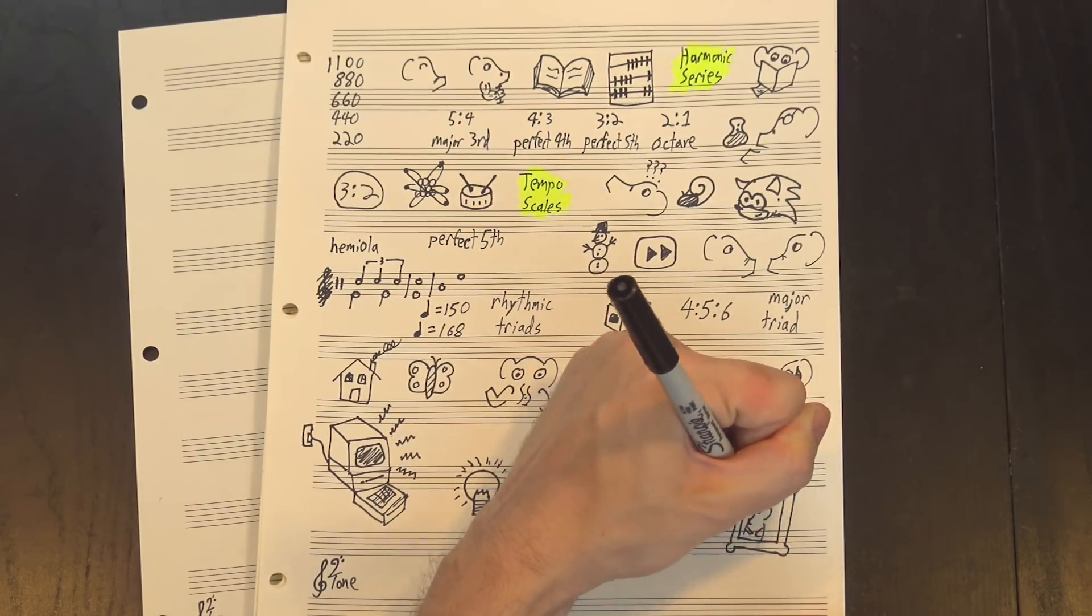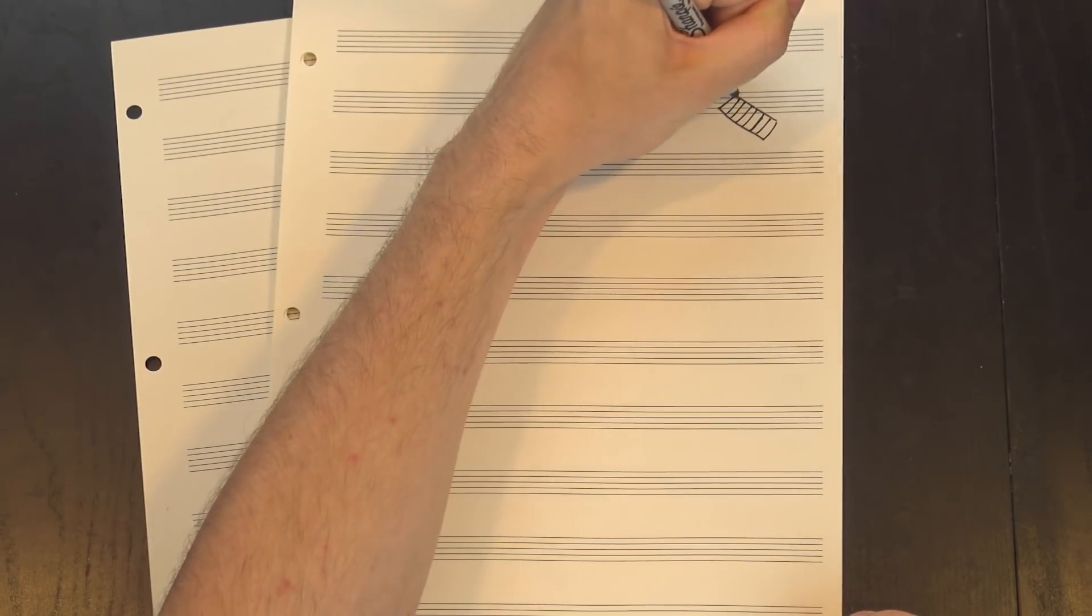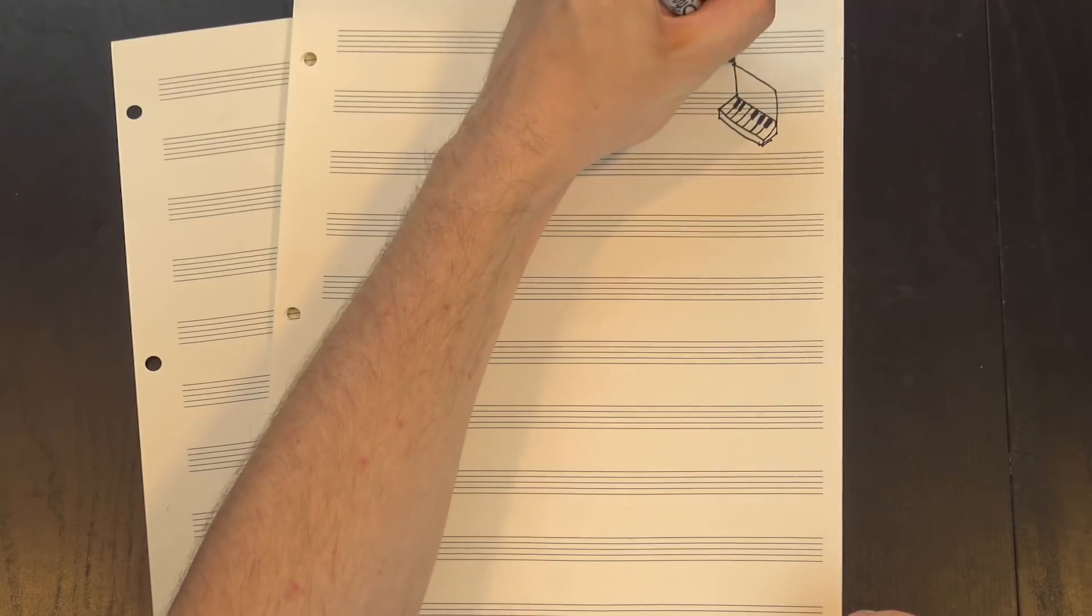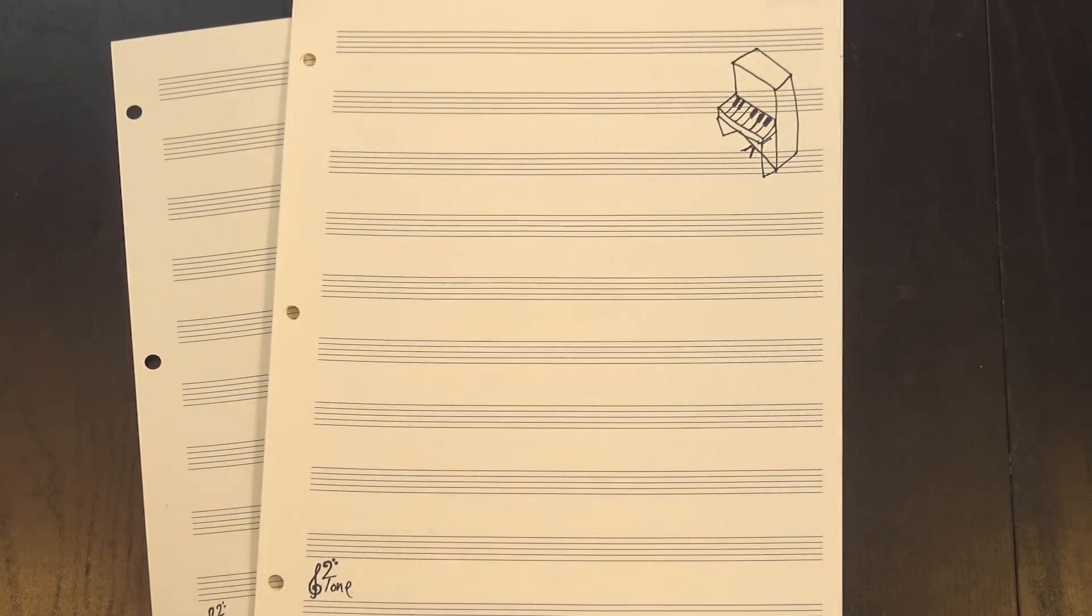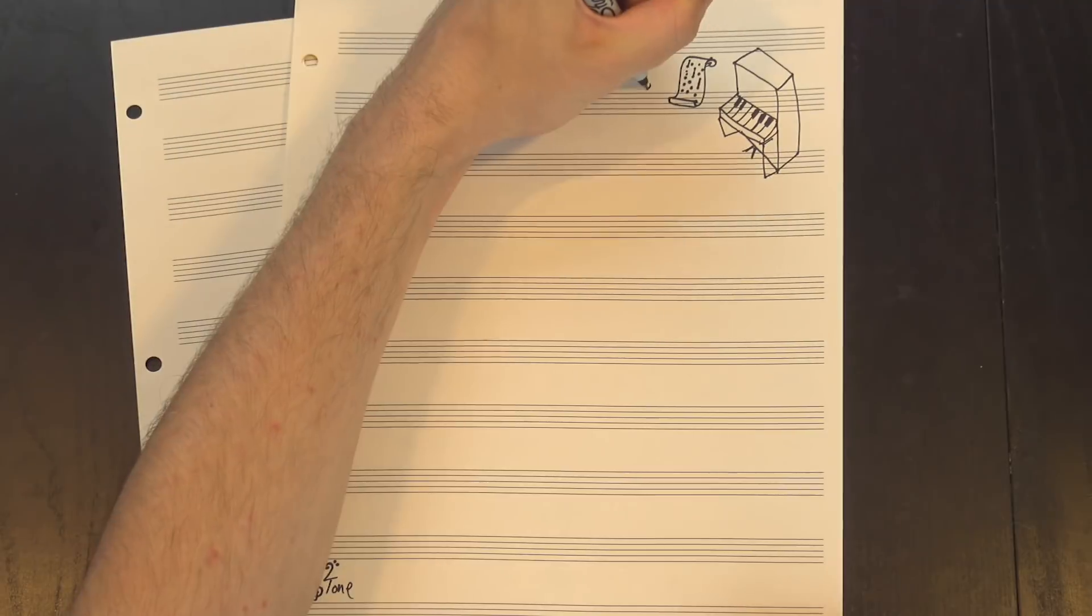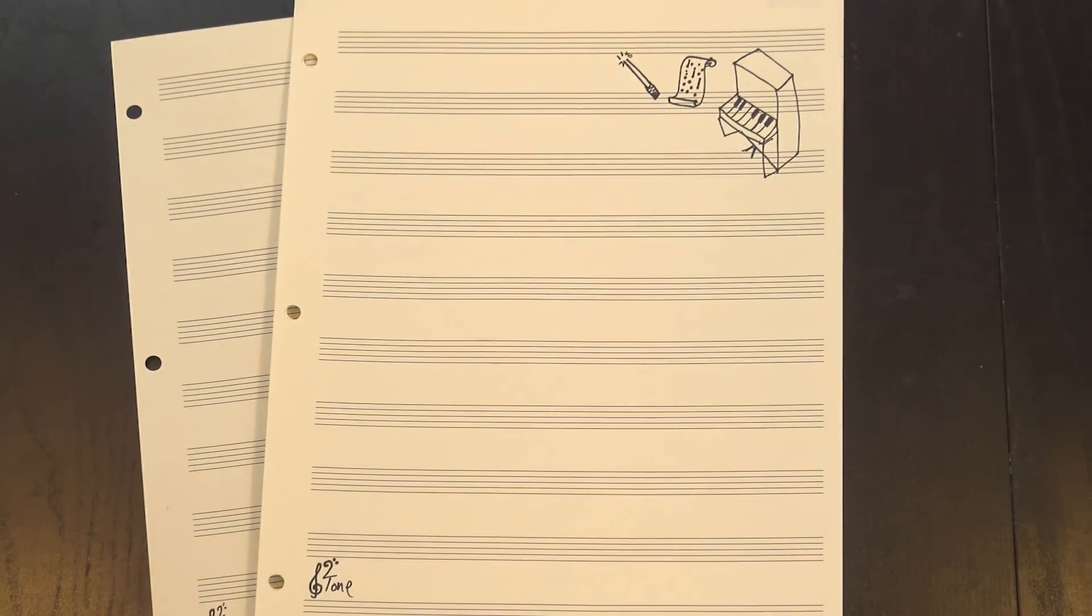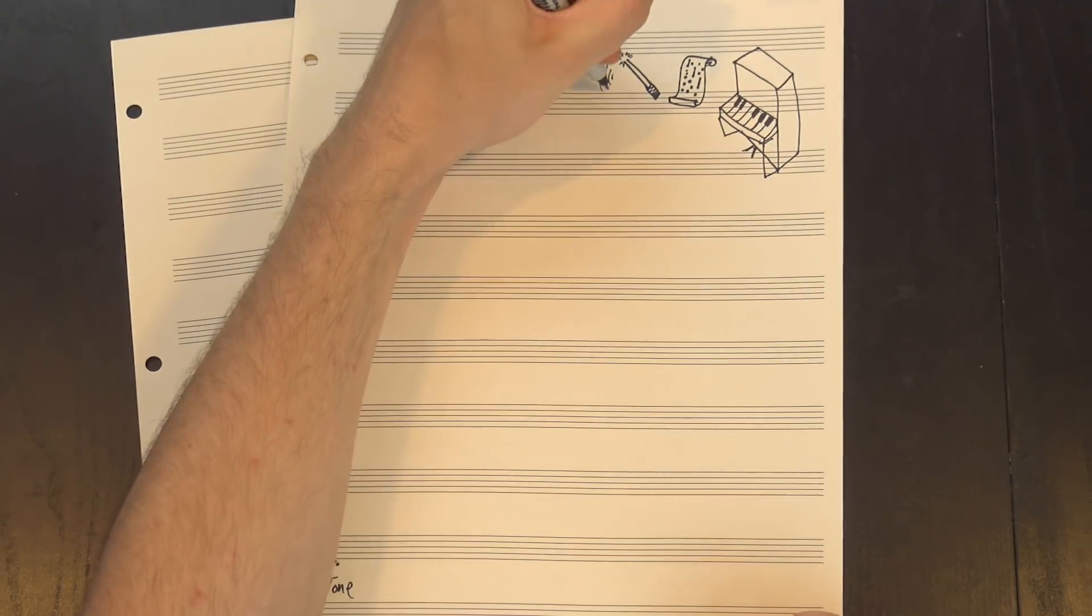And that is where Nancarrow comes back into the picture. Player pianos were a popular device in the early 20th century that were, in effect, pianos that could play themselves. You programmed them by punching holes into long strips of paper that you then ran over detectors, and whenever a hole passed over, the piano played the corresponding note.